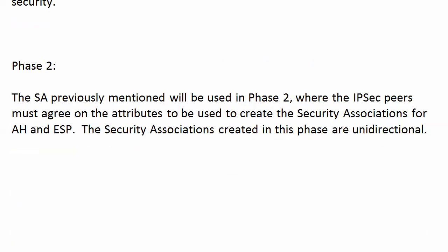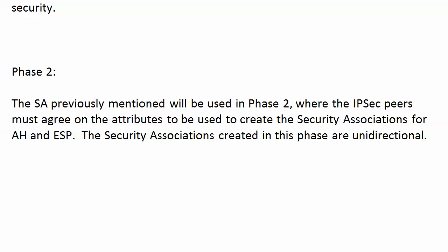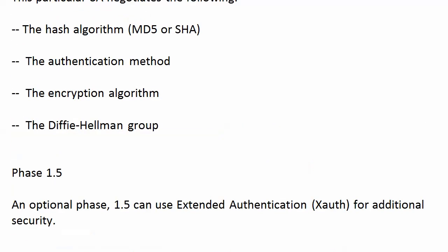Phase 2: the SA from phase 1 is now used, and the IPsec peers must agree on the attributes to create security associations for AH and ESP. Watch this one — the security associations created in phase 2 are unidirectional, in contrast to the bi-directional IKE SA from phase 1.